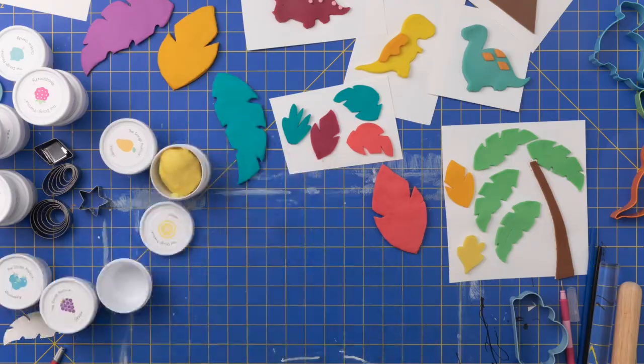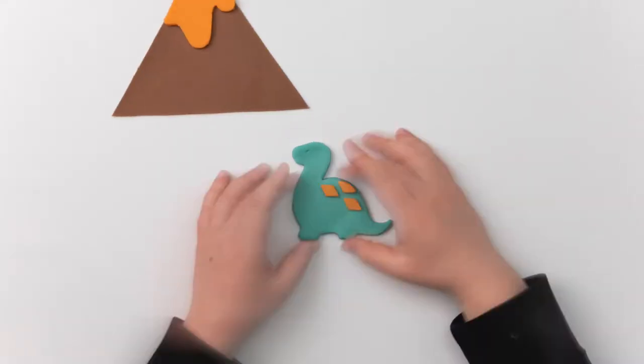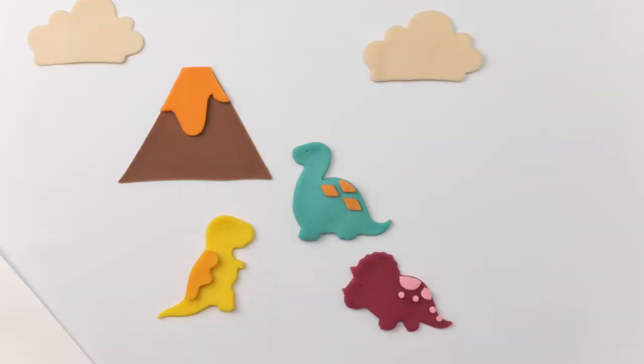And then we put all those shapes on like a cookie sheet to save them for when we were ready to film, which we filmed as soon as we were able to, like after we cut them. We filmed it as soon as possible so that the dough wouldn't dry out, because stop-motion takes a long time.